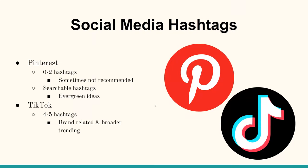Pinterest generally doesn't use hashtags — 0 to 2 would be within the best range. When you do use them on Pinterest, think about things that are recurring and evergreen, like potted plant ideas, something that could be used year after year. TikTok calls for about 4 or 5 hashtags for most posts, and usually splitting them between branded content and a couple of broader trending ideas makes the best use of those hashtags.